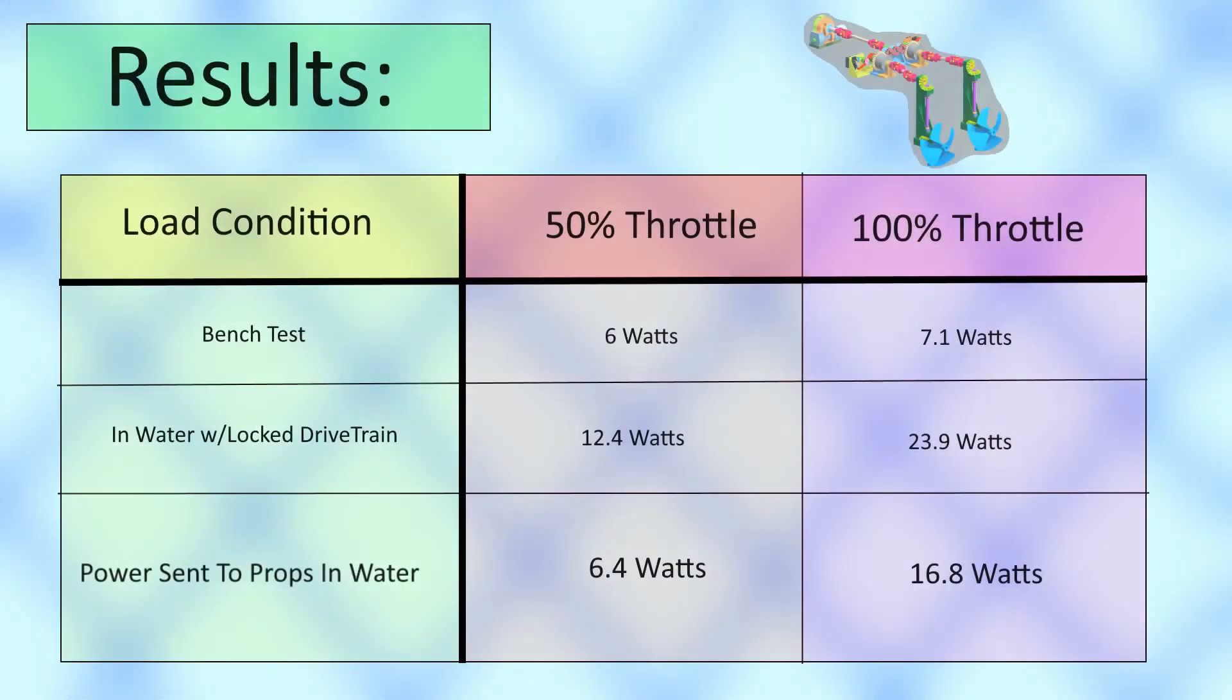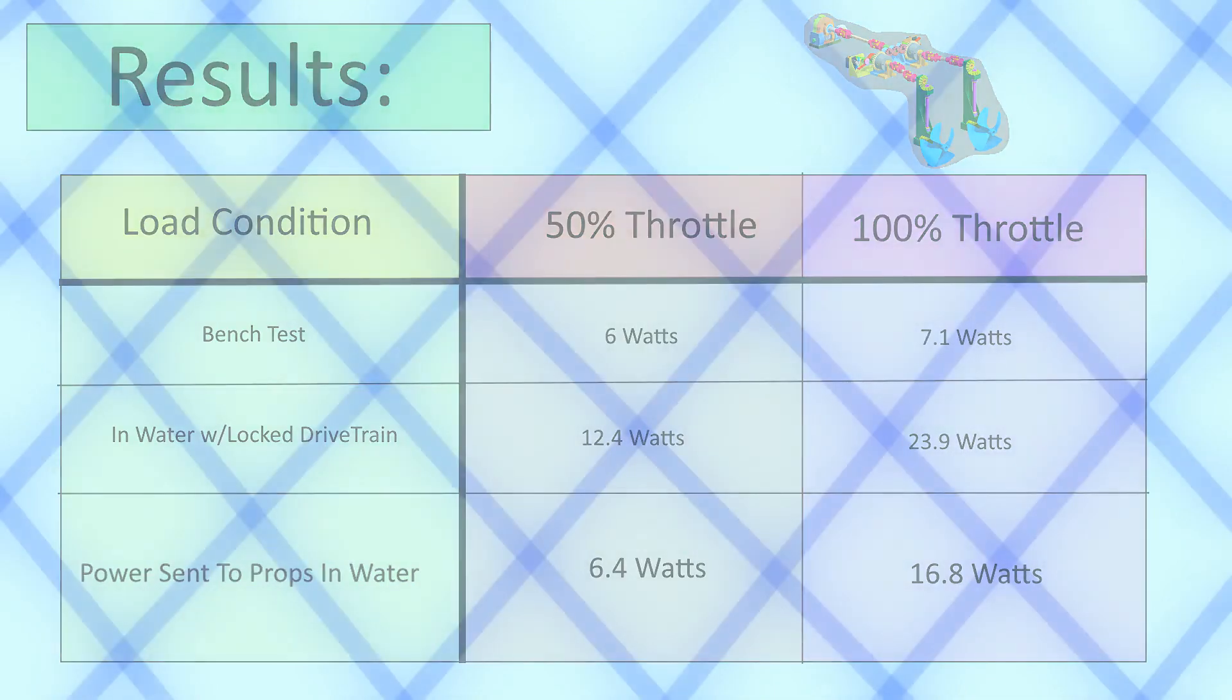If we can trust our power data, the motor was able to put out about 16.8 watts into the water before melting, with a total power output of right around 30 watts into the system as a whole.